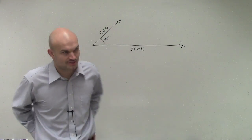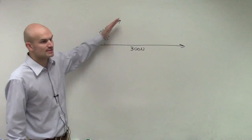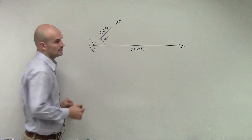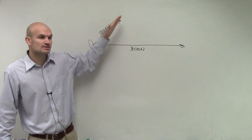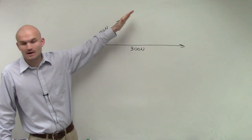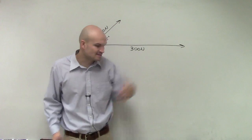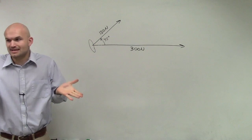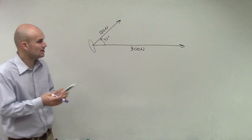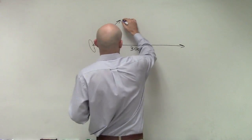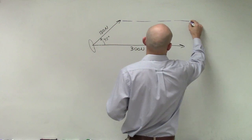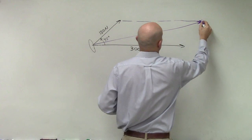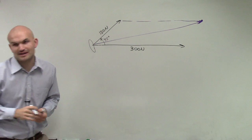So we want to find the resultant vector. You have a force pulling something this way — here's like a hook. On this hook, you have two forces: one going 45 degrees above the horizon, and then a force going directly horizontally. They said find the resultant vector — we want to see exactly where that force is being pulled between those two.